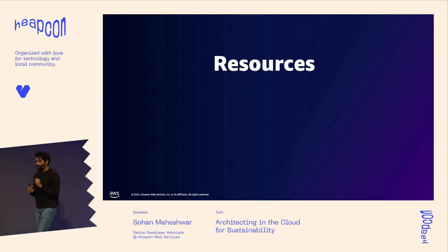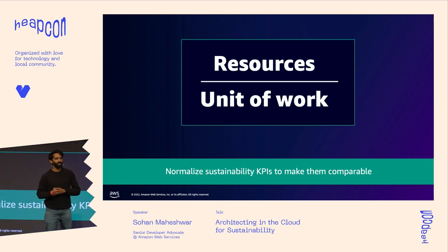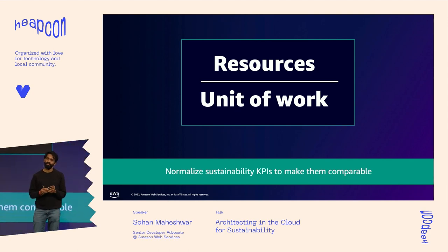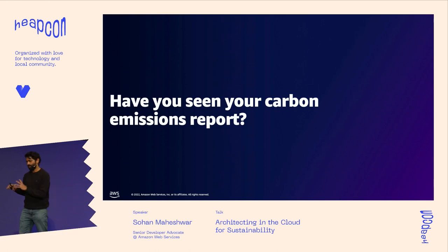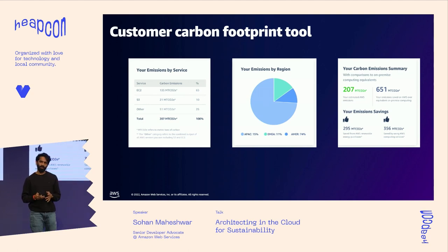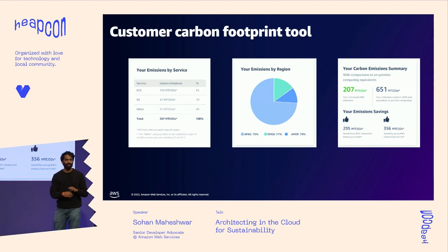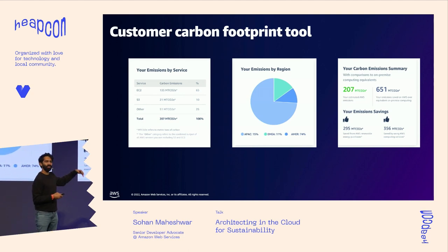A good way to think about metrics: don't just look at raw resources. Look at resources divided by the unit of work. For example, don't just say 'we have 100 virtual CPUs running' — think '100 virtual CPUs per connected mile of our fleet of taxis.' That gives a more accurate representation of how resources are consumed relative to scale. We also launched the customer carbon footprint tool — available in general availability this year — which gives detailed metrics about your carbon footprint by region and by service, with tips on how to reduce it.